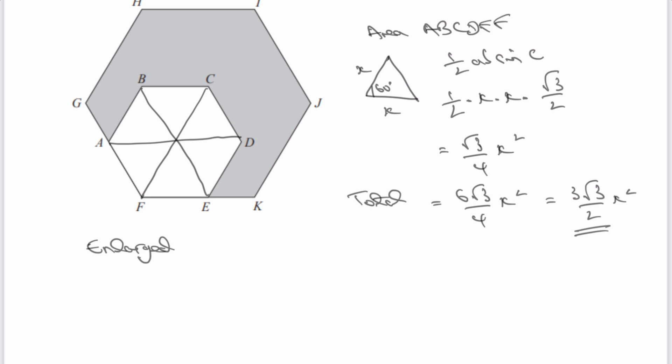which in this particular case is going to be FGHIJK, is now not just the area of the small hexagon, which is 3 root 3 over 2, but now it's going to be enlarged by a scale factor of P, so it's going to be PX squared.